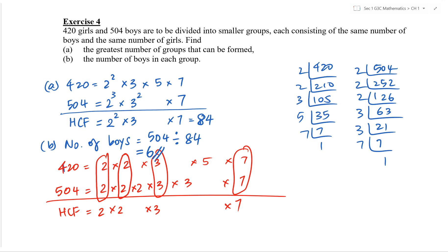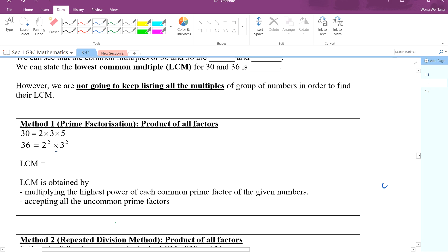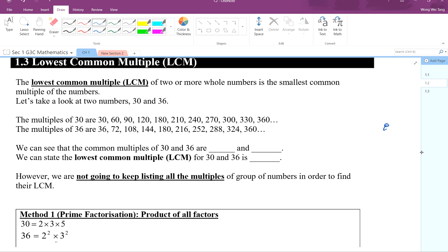Is there ever a highest common multiple? For example, for 2 and 3 — the LCM is 6, then 12, then 18 — it gets bigger and bigger. You can never find a highest multiple because they go on forever. So that is why we only deal with highest common factor and lowest common multiple.